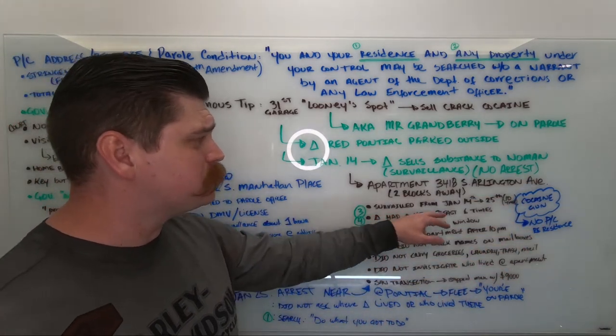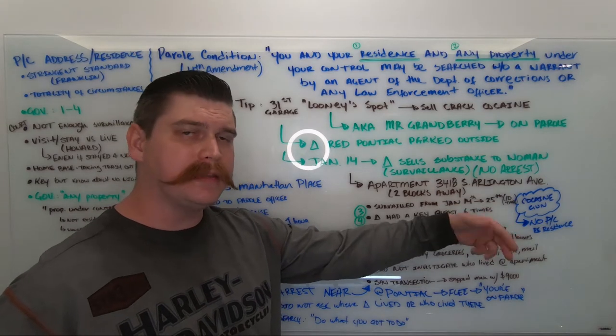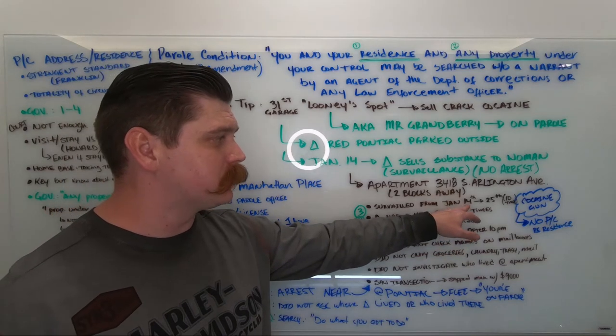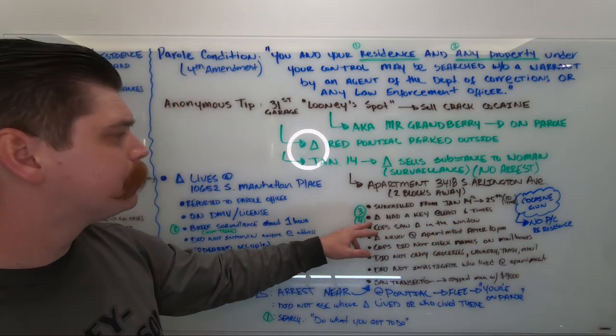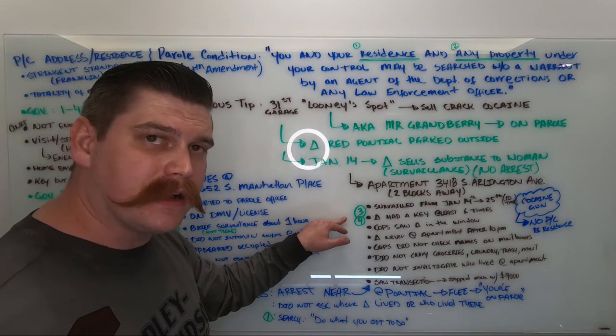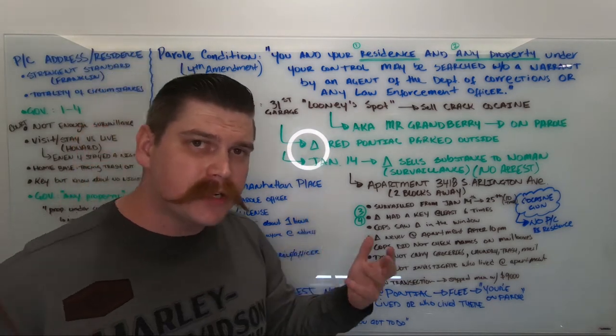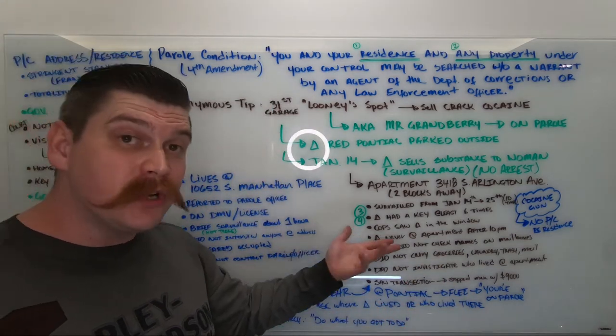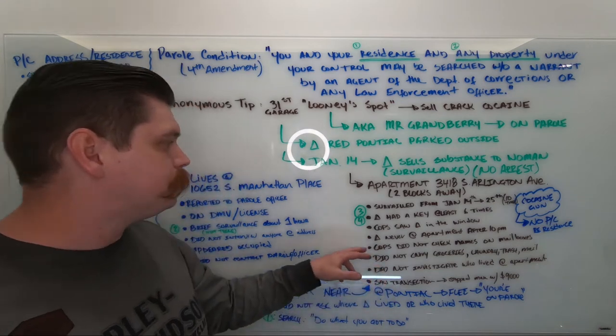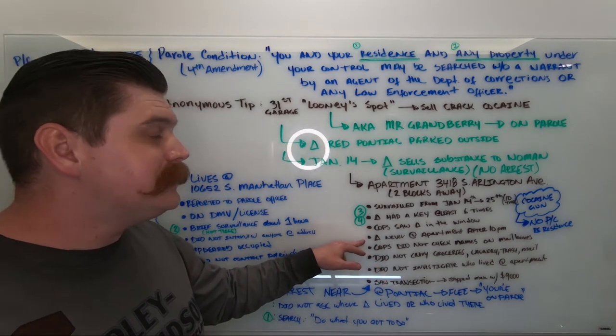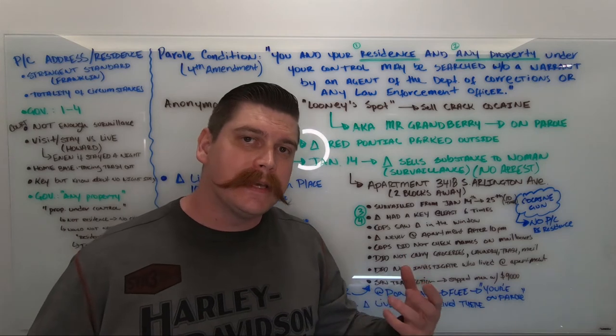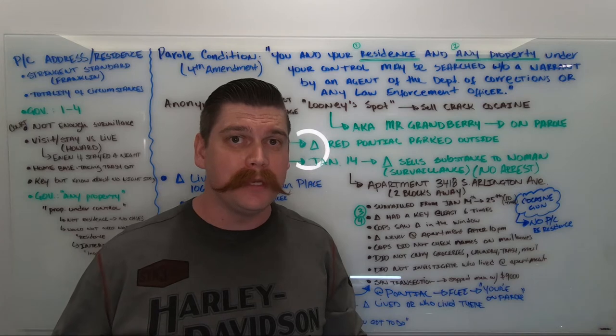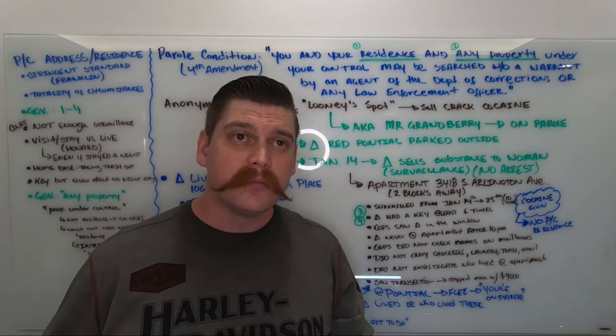They did it from January 14th to the 25th, and they saw Mr. Granbury there about 10 times. And they were also surveilling him for about 9-10 days. They noticed that 6 of the times, at least, Mr. Granbury used a key to enter the apartment. And then they observed Mr. Granbury inside the apartment through the window. They never saw Mr. Granbury inside the apartment after 10 p.m. And they also never saw Mr. Granbury at the apartment before about 9 a.m. So he was never there overnight.